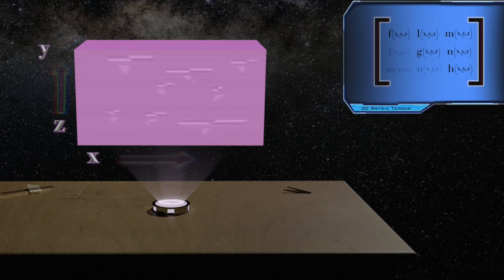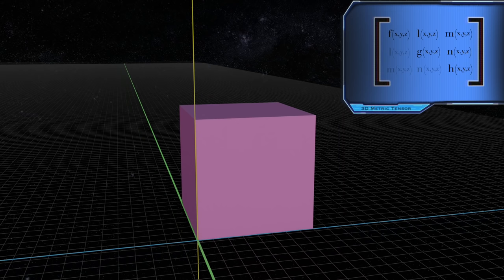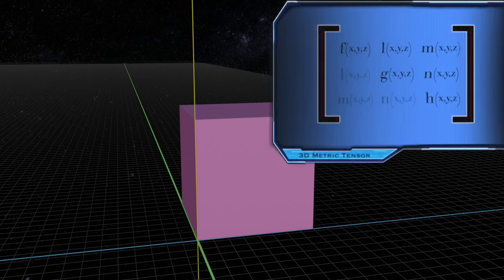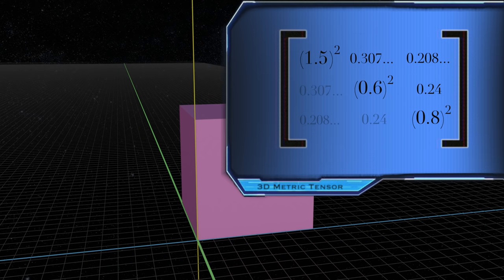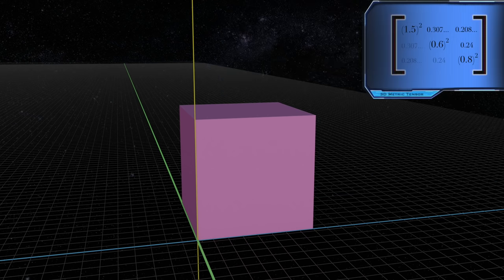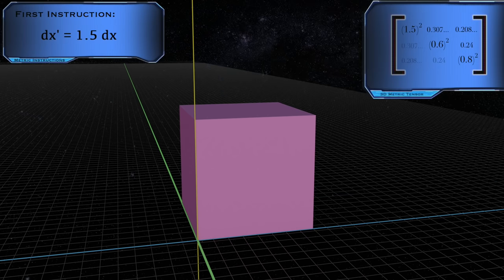So let's just say that those functions, at this specific point where our cube of interest is located, end up giving us something like these numbers. Now, the first instruction from the metric tensor, at this point, is to multiply dx by 1.5.